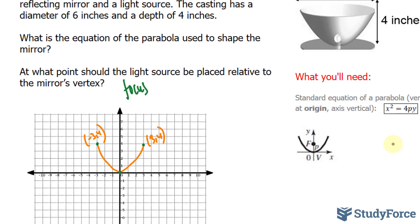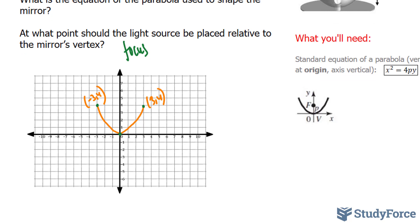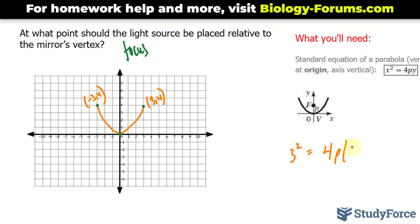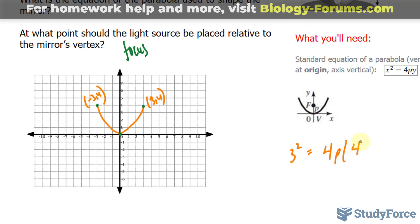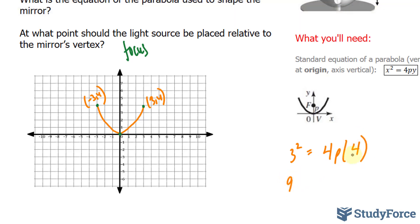So let's substitute a known point into here to find out what p is. A known point is (3,4) so I'll take 3 and place it in there. 3² = 4p times 4. 3 to the power of 2 is 9 divided by 16 gives us our value of p.